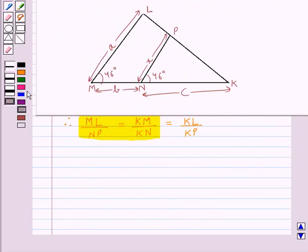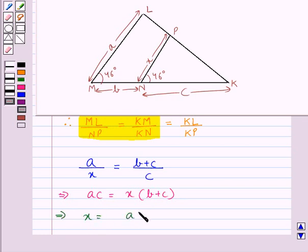So, substituting the values for ML, NP, KM and KN we have a upon x is equal to b plus c upon c. This means we have ac is equal to x into b plus c which gives us x is equal to ac upon b plus c.